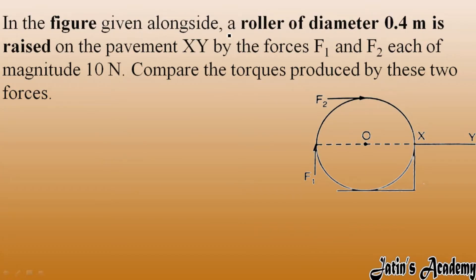In the given figure alongside, a roller of diameter 0.4 meter is raised on the pavement XY by the forces F1 and F2, each of magnitude 10 newton. This means F1 value is 10 newton and F2 value is also 10 newton.